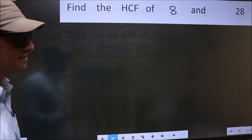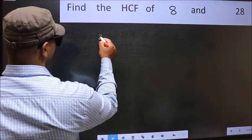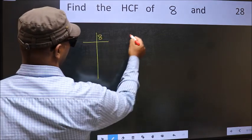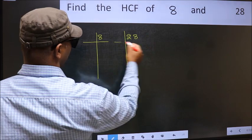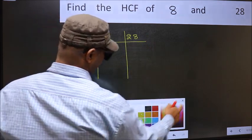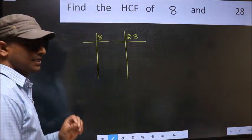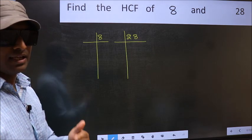What I mean is, write 8 and 28. This is your step 1. Next.